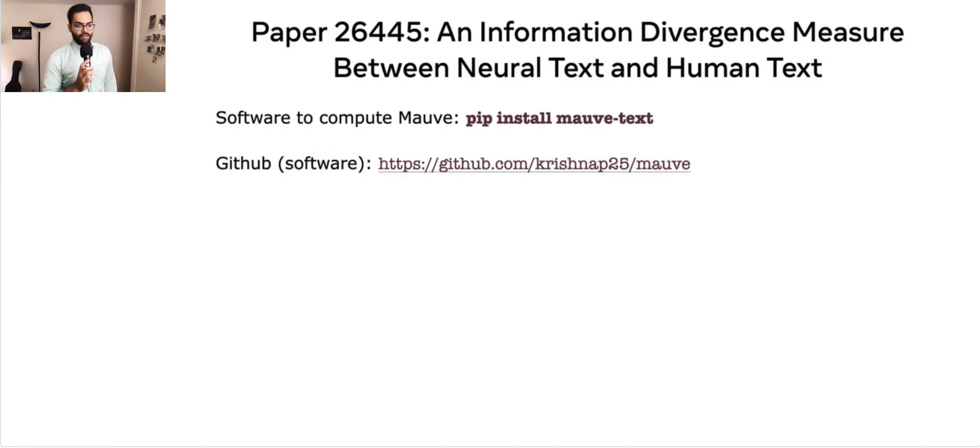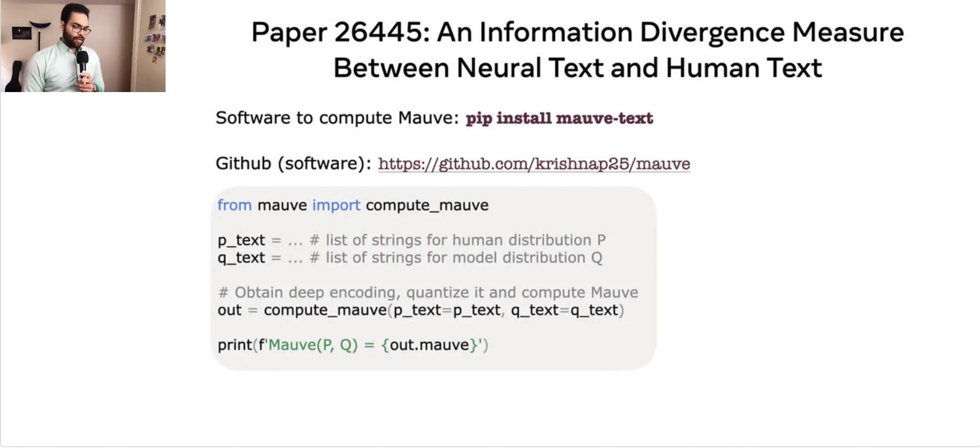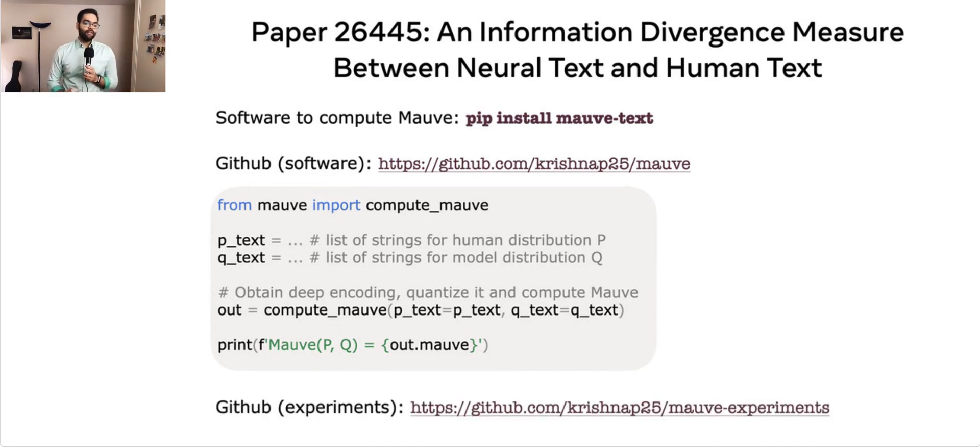Finally, we have a PyTorch package which can be installed via pip. The GitHub link is shown on the screen. And the package is also very straightforward to use, as shown by this simple example. Finally, the code and the scripts to replicate our experimental results are also available online at this GitHub link. With this, I conclude my presentation. Thank you for listening.